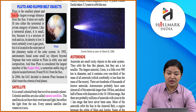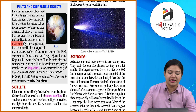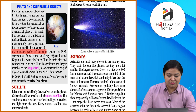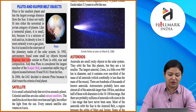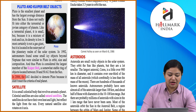Pluto is the smallest planet and has the largest average distance from the Sun. It does not fit neatly into either the terrestrial or Jovian category. Like a terrestrial planet it is small, but because it is a mixture of rock and ice its density is low. In 1992, astronomers found small icy objects beyond Neptune similar to Pluto in orbit, size, and composition. Thus Pluto is considered the largest member of the Kuiper Belt — a ring of objects located between 30 and 50 AU from the Sun.